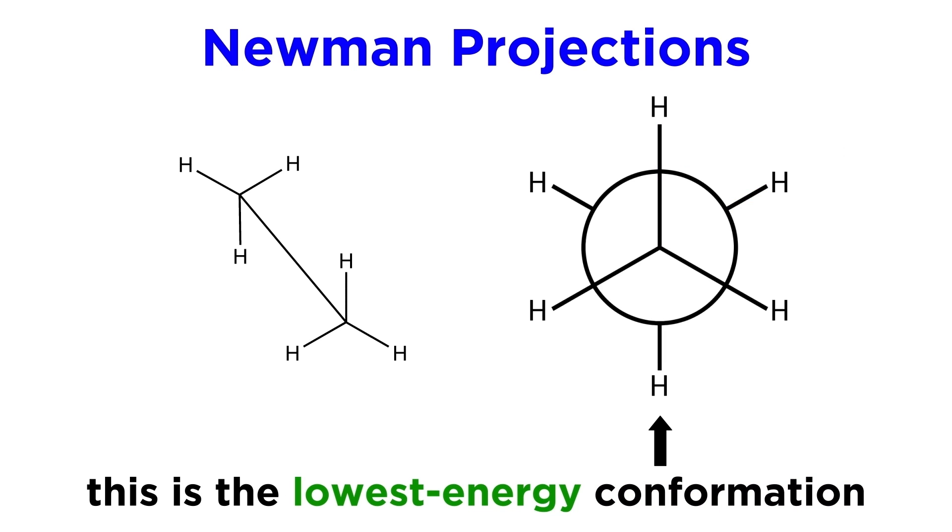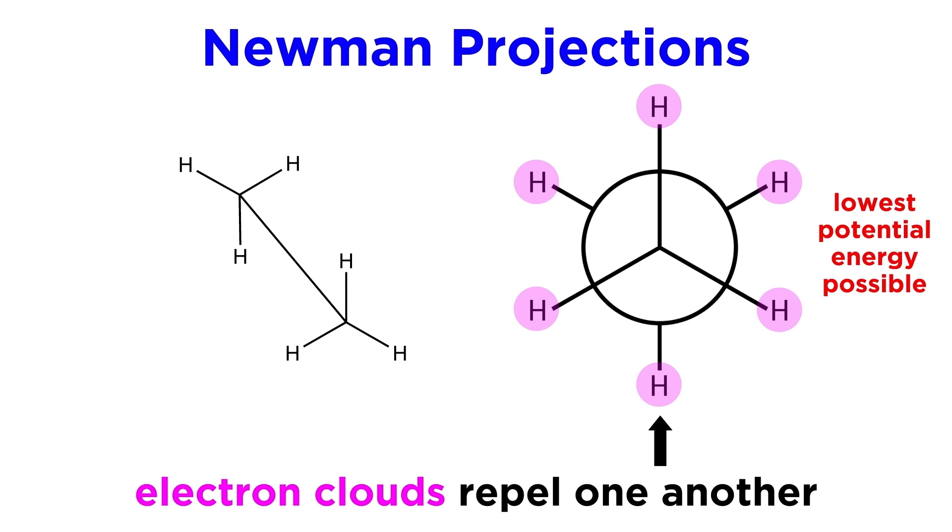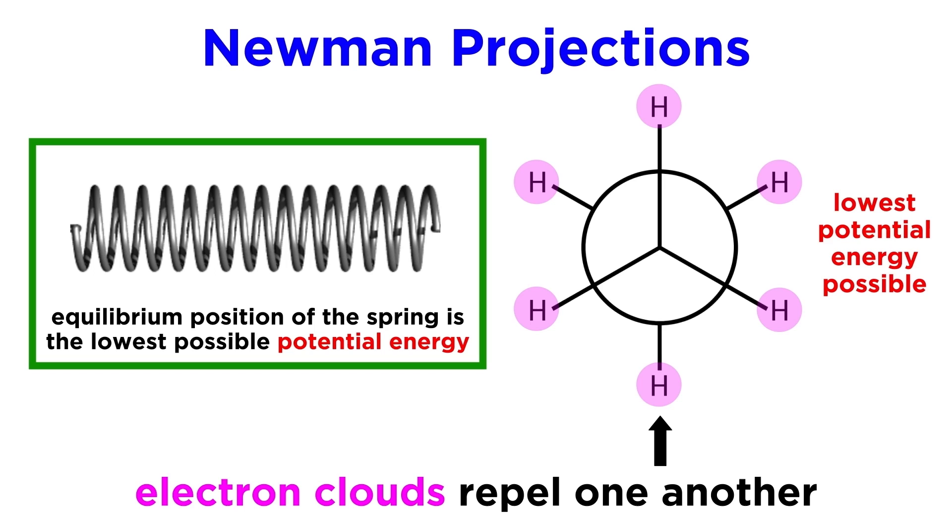This is the lowest energy conformation for the molecule, because it puts the hydrogen atoms as far away from each other as possible, just the way the groups oriented around a central atom will spread out as much as possible. This is because they will have a tendency to reach the lowest potential energy possible, given that electron clouds will repel one another, just the way a compressed spring will have a tendency to relax back to its equilibrium position.